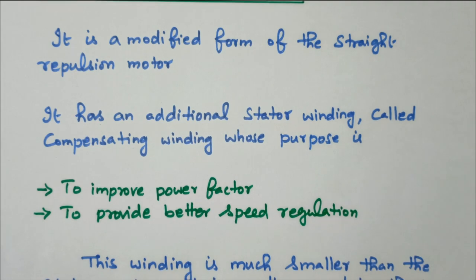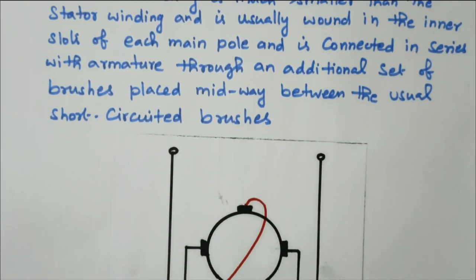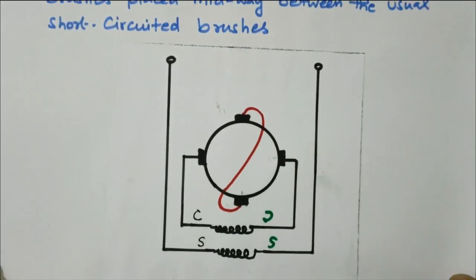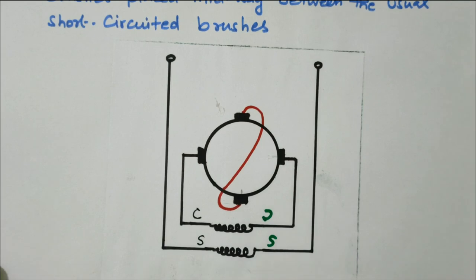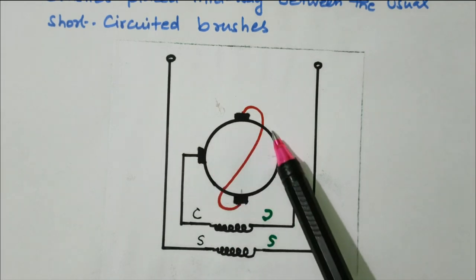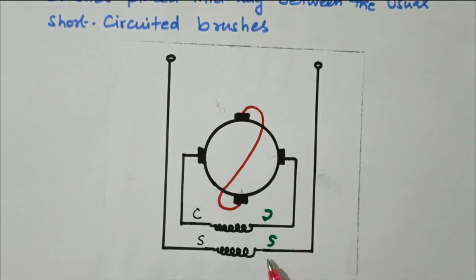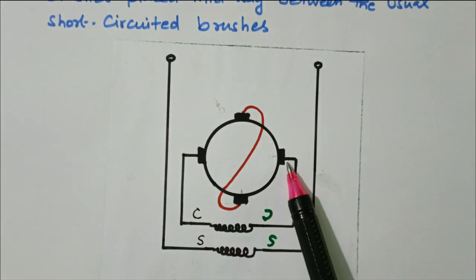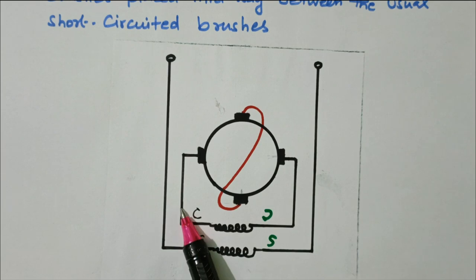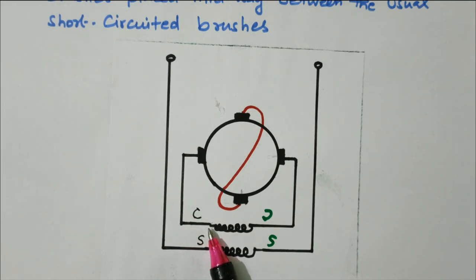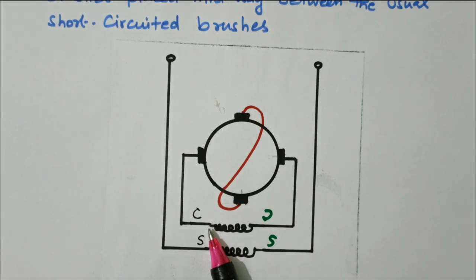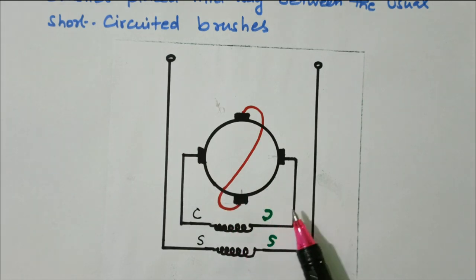Now we'll see the diagram. This simplified diagram shows the rotor as the rotating part and the stator winding. In the rotor section, the compensating winding is connected.